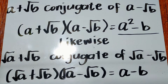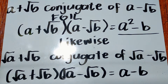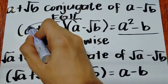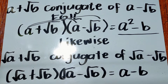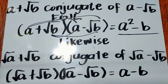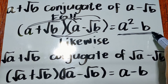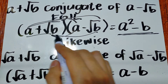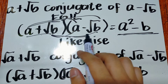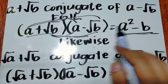You can also solve it using the FOIL method — First, Outer, Inner, Last. If you forget that a plus square root of b times the quantity of a minus square root of b equals a squared minus b, you can use FOIL to verify.